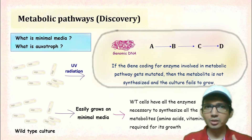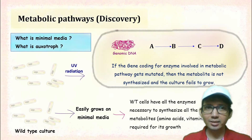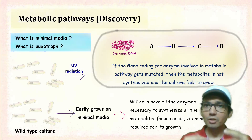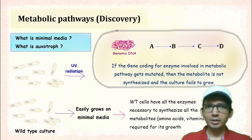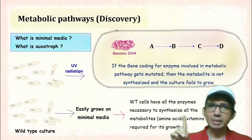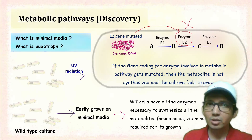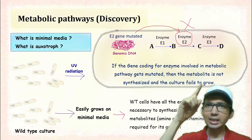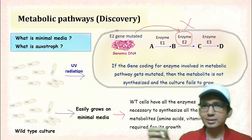Because of UV radiation, if a gene coding for an enzyme involved in a metabolic pathway gets mutated, then the metabolite is not synthesized, and as a result, the culture fails to grow. For example, consider a metabolic pathway where metabolite A gets converted into metabolite D, with metabolites B and C as intermediates. If the gene coding for enzyme E2 gets mutated, then the final metabolite D is not produced and the cell fails to grow.